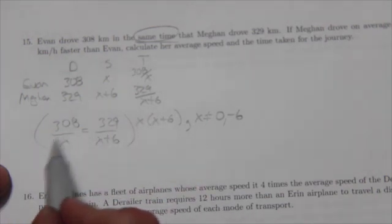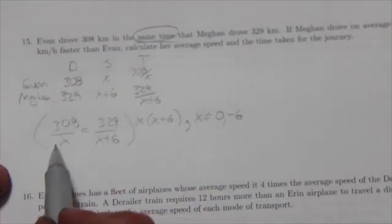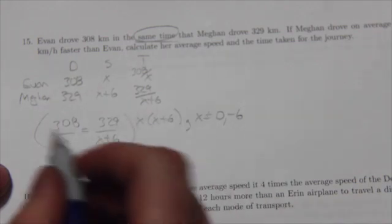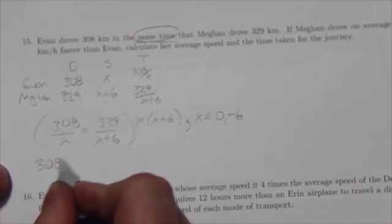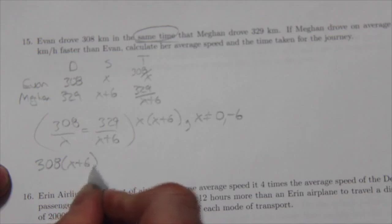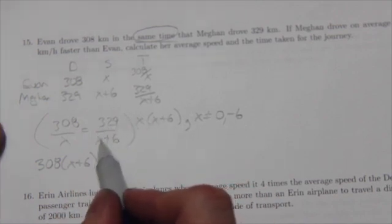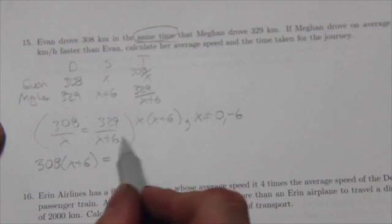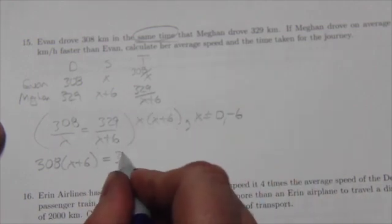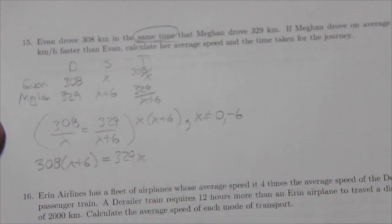When you do that on the left-hand side here because it's 308 divided by X then the X's will cancel and we're left with 308 times X plus six. On the right-hand side because it's 329 divided by X plus six, the X plus six terms will cancel and we'll be left with 329 times X.